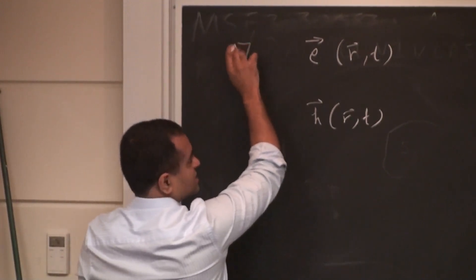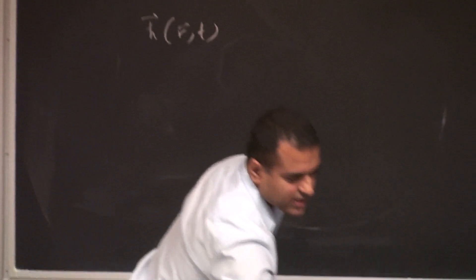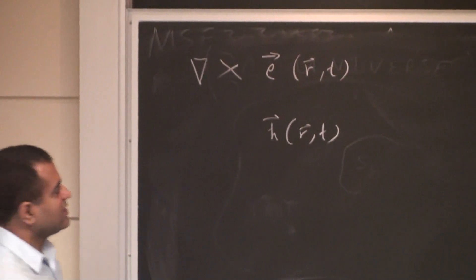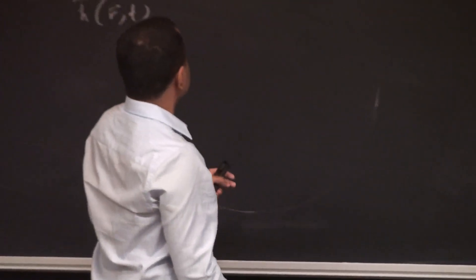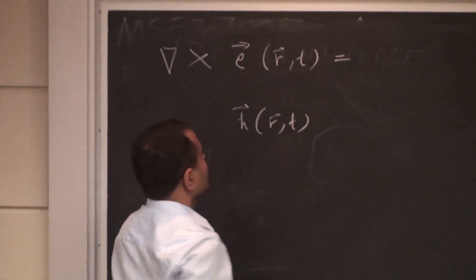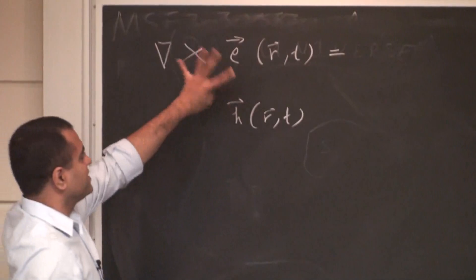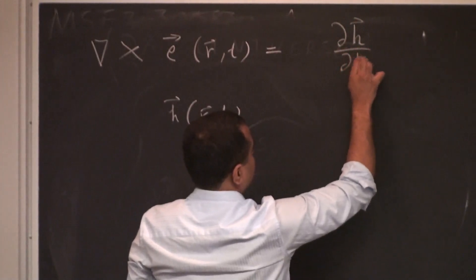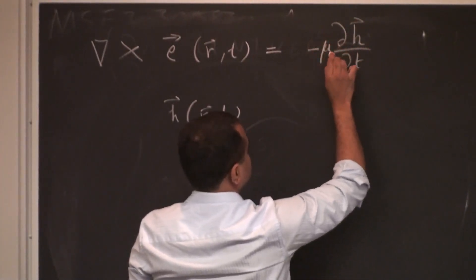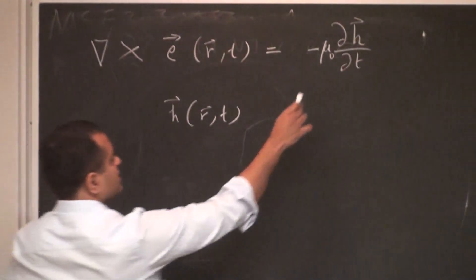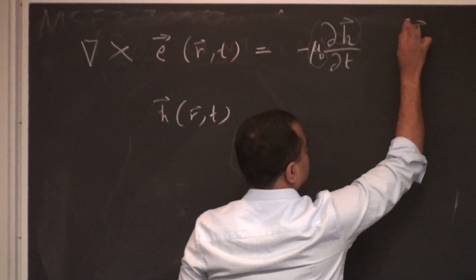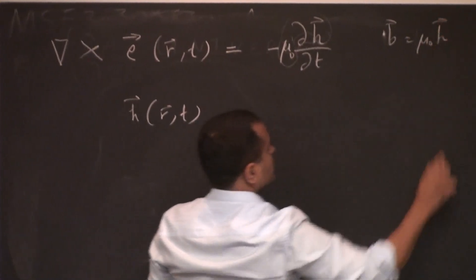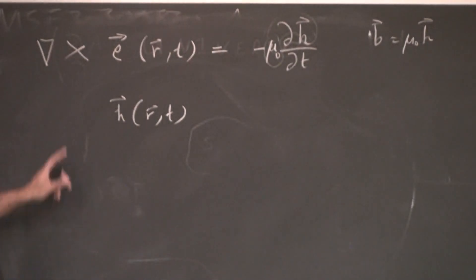From Faraday's law: the curl of the electric field is finite only if there's a time-varying magnetic field. So curl of E equals minus mu-naught times dH/dt, in free space with no material media. Similarly, curl of H has two components: a conduction current if there are free charges like in a metal or plasma, plus a displacement current written as the time derivative of the displacement vector D, which in free space is just epsilon-naught times E.